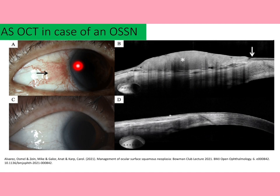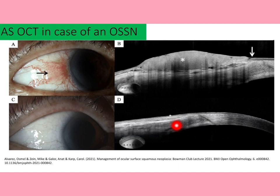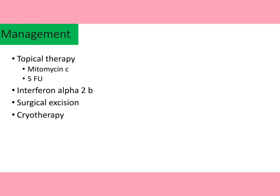On ASOCT imaging, figure A shows OSSN in a papilliform manner, and figure B shows a hyper-reflective epithelium with disrupted attachment at the basement membrane. Figures C and D are after treatment of the same eye, demonstrating complete resolution of OSSN from the ocular surface. This confirms that with proper management, OSSN can fully resolve.